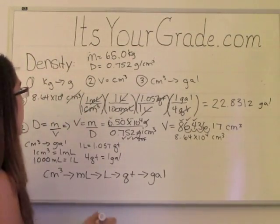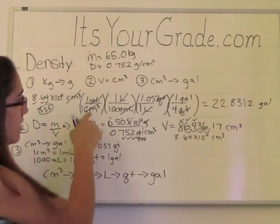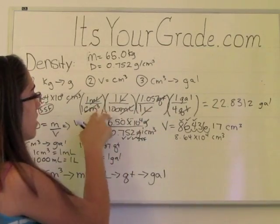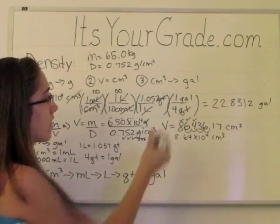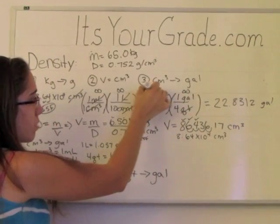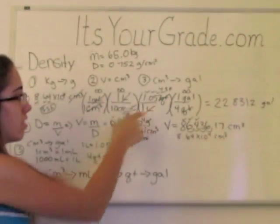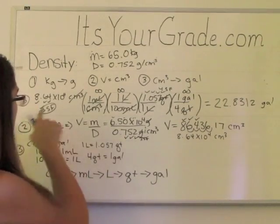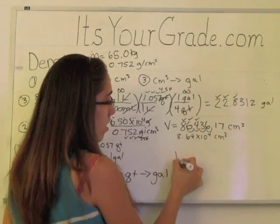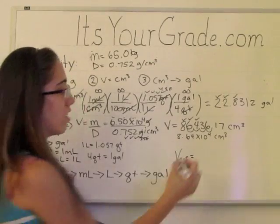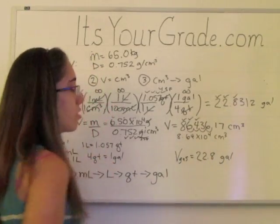Again, significant figures need to come into play: 3 sig figs here. And these two are both exact because they have infinite number of sig figs. This is also exact. This one has 4 sig figs because this is an approximation, not an exact value. 3 sig figs is the lowest, so our answer has to have 3. The volume of the gas in the gas tank is going to be 22.8 gallons. The 3 is less than 5, so there's no rounding.